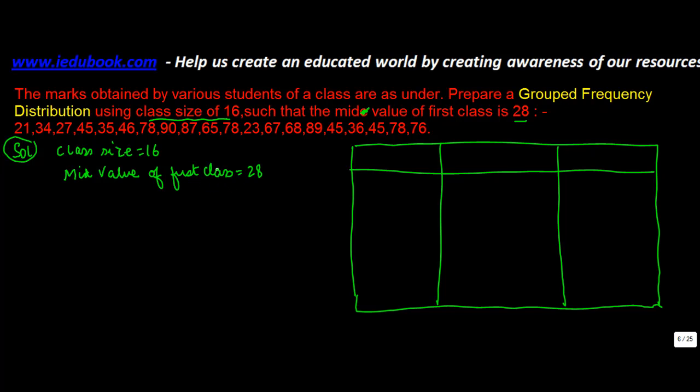Now, what is the mid value? Let's say you have a class of 20 to 30. The mid value is the value which lies in the middle of these two numbers. And to find that, what do you do? This is the lower limit, this is the upper limit.